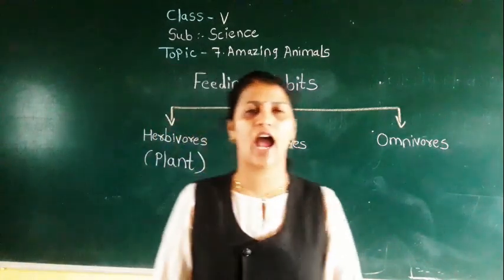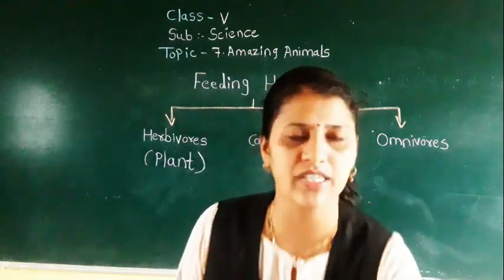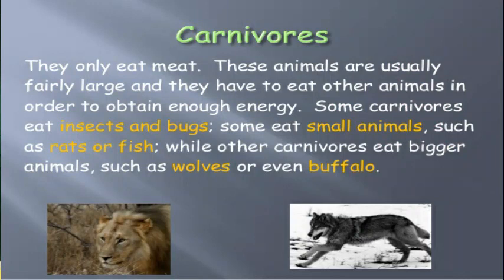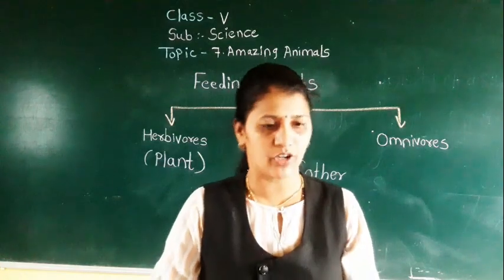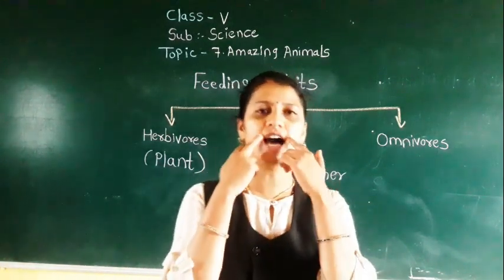The next type of feeding habit is carnivorous. Carnivorous animals eat the flesh of other animals. For example, tiger and lion depend on other animals for food — they are called carnivorous animals. To tear the flesh of other animals, they have very strong, sharp pointed teeth called canines.